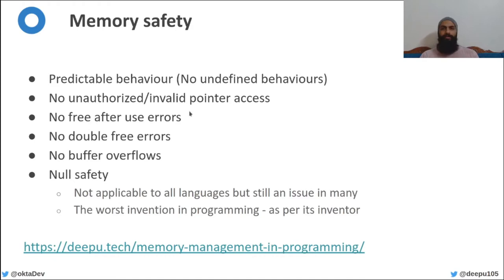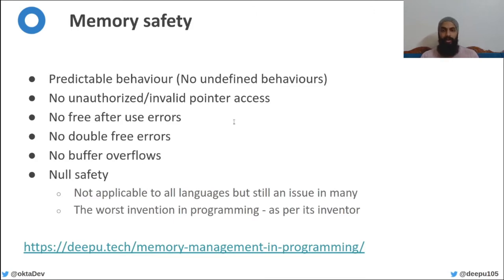Why is this a big deal? Don't all major programming languages ensure this? Yes, to a varying extent. But some languages are unsafe by default — for example, C and C++. In C or C++, you can access the memory of another variable by mistake, or you can free a pointer twice — that's called a double free error. Sometimes a program continues to use a pointer after it has been freed — that's called a use-after-free error, or a dangling pointer.